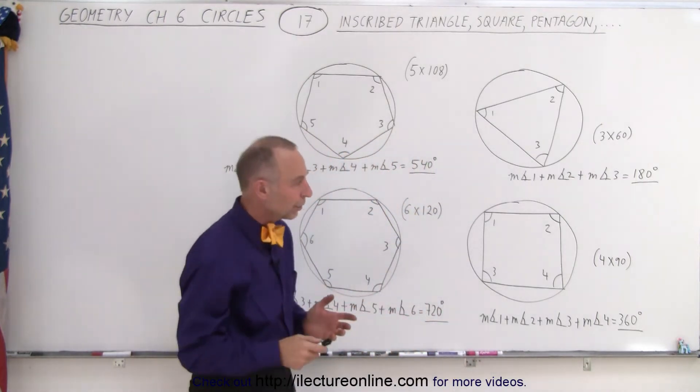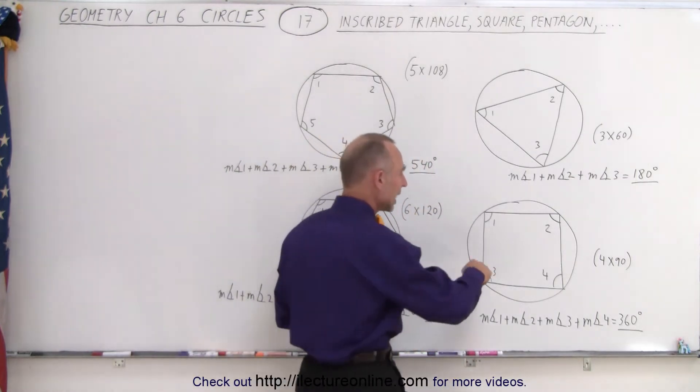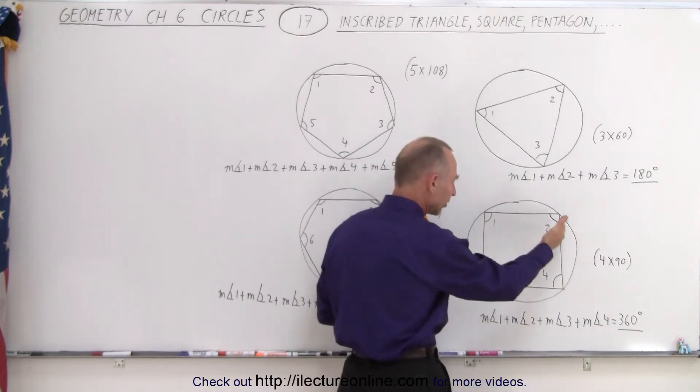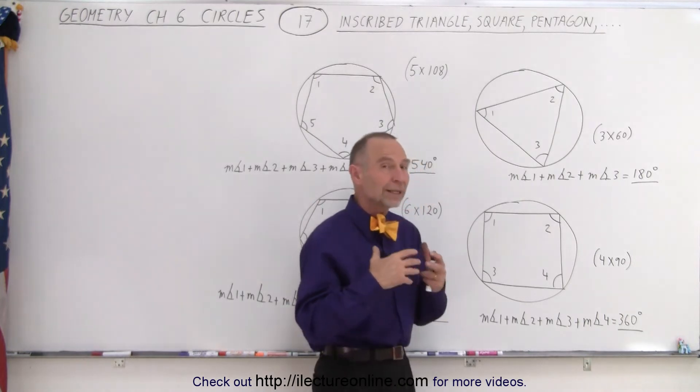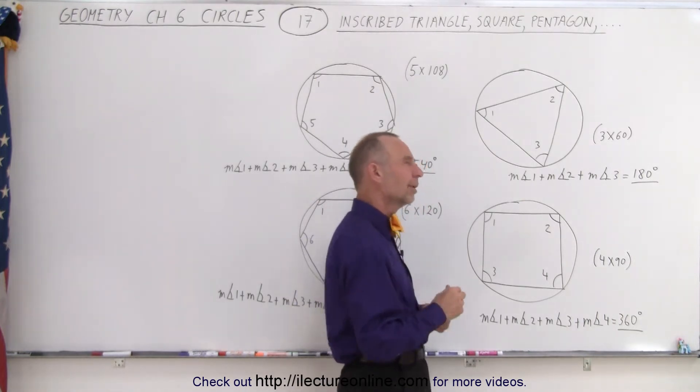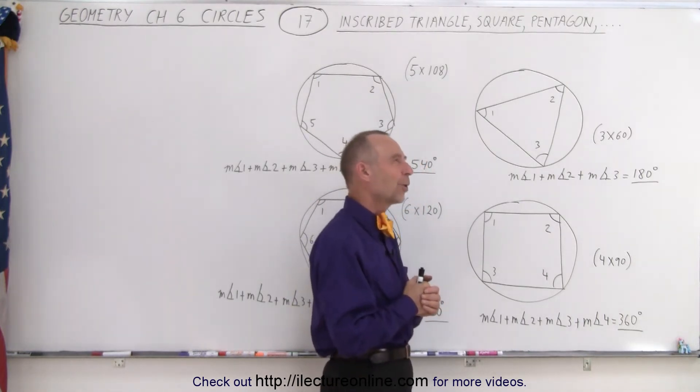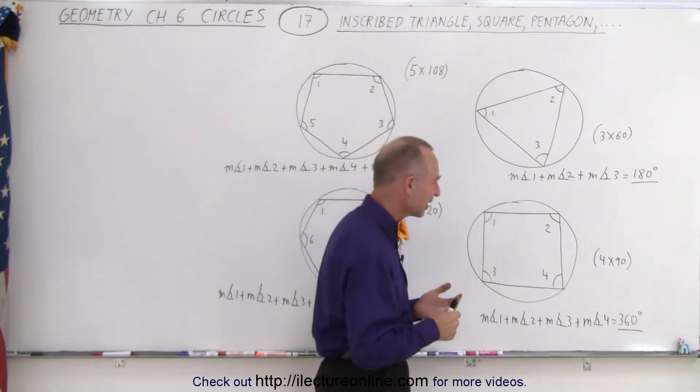But if it's a square, notice then if we sum up the angles of a square, knowing that of course each angle is 90 degrees if it's a perfect square. If it's a quadrilateral, meaning that the sides are not necessarily the same,